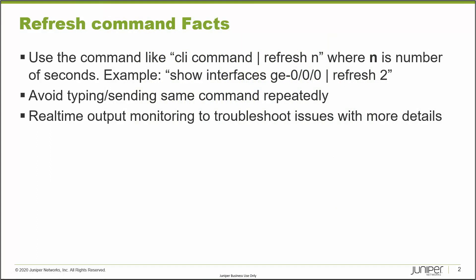To run refresh with any Junos commands, all you have to do is basically run your CLI command with the pipe and the refresh keyword followed by the number of seconds you want it to refresh. So there's an example here: show refresh 2 means this command will basically refresh the output of the show interfaces GE000 command every two seconds.